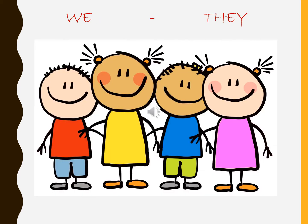Now here we are talking about the pronouns 'we' and 'they'. 'We' is used when we are talking about ourselves and someone else. Example: John and I are friends. We go to the same school — here 'I' was included with someone else, so the pronoun 'we' was used. 'They' is used when we talk about more than one person. Example: Joanna and Riship are friends. They go to school together — here we are talking about more than one person, so the pronoun 'they' is used.